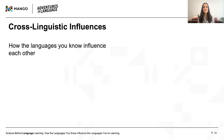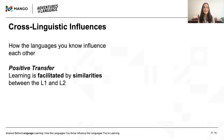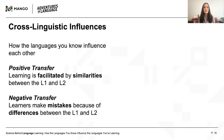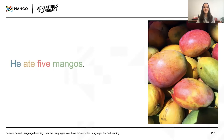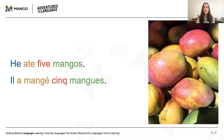Early research in this area was based on the assumption that L2 learning was mostly a question of adjusting habits developed during L1 learning. Learners might experience positive transfer, where learning is facilitated by similarities between the L1 and L2, or negative transfer, where learners make mistakes because of differences between the L1 and L2. For example, an English speaker saying 'he ate five mangoes' in French gets 'il a mangé cinq mangos' — a perfectly correct French sentence. This is an example of positive transfer, since English and French have very similar word order, so what the learner already knows about English helps when producing this sentence in French.